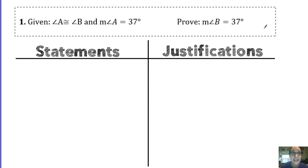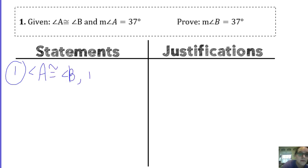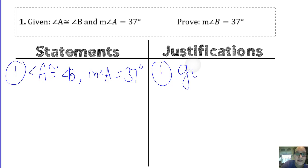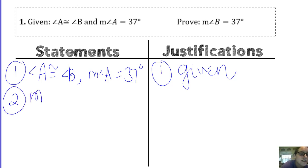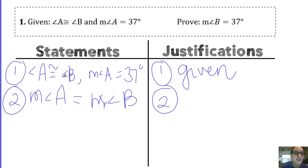My end result will have an equal sign, so I need to switch from congruence to equality. I'll copy all my given as my first statement: angle A is congruent to angle B, and the measure of angle A is equal to 37 degrees. Now, if angle A is congruent to angle B, that means the measure of angle A equals the measure of angle B. The reason I can switch between two angles being congruent and their measures being equal is the definition of congruent angles.